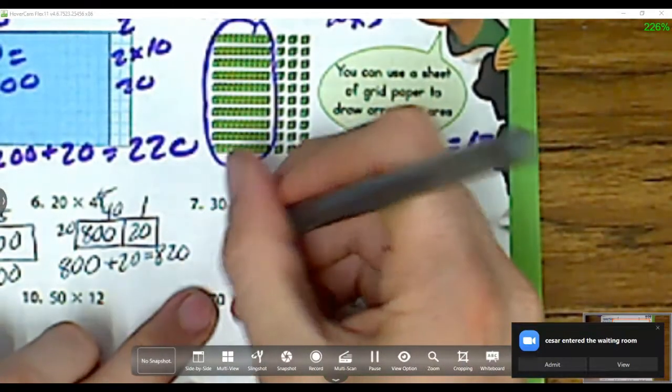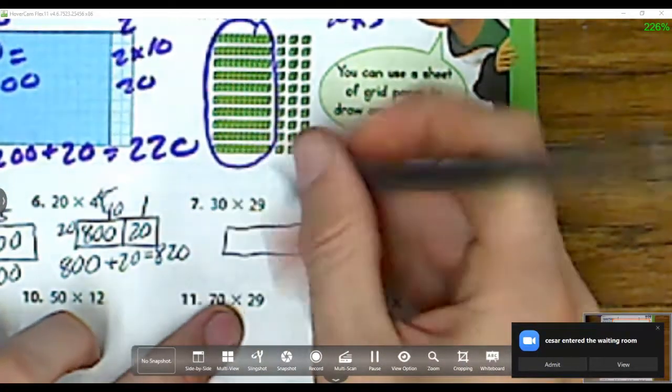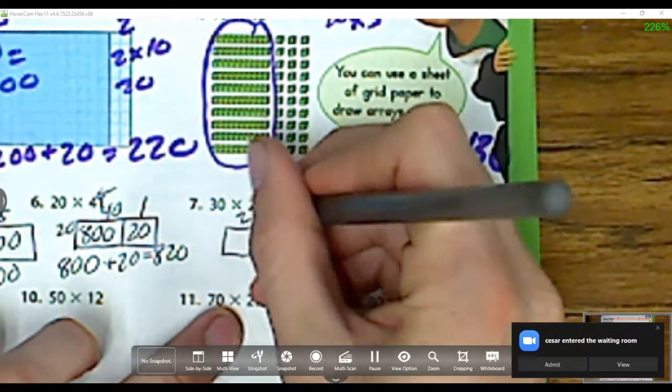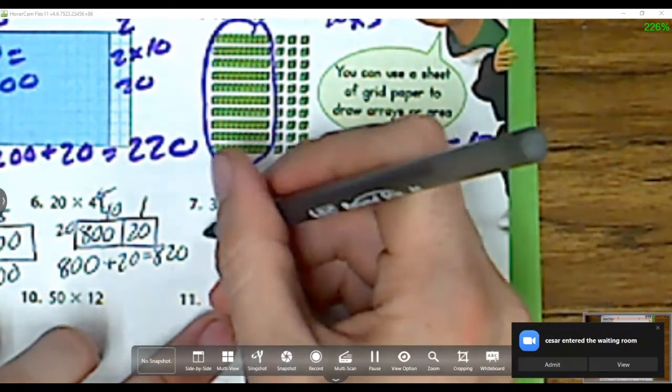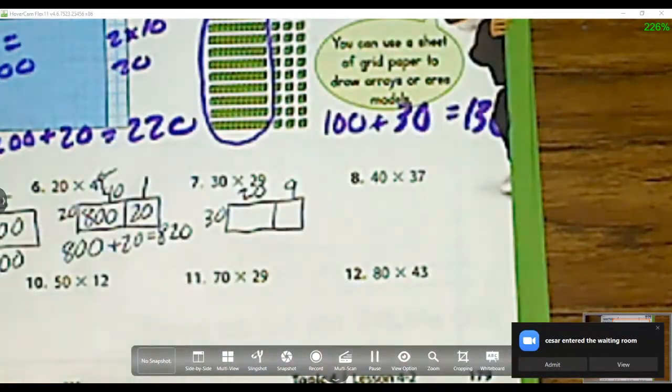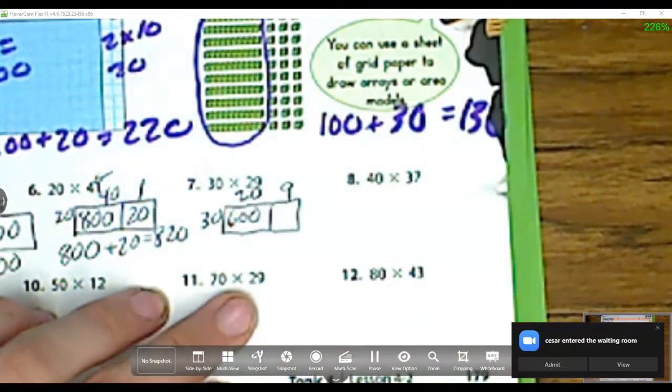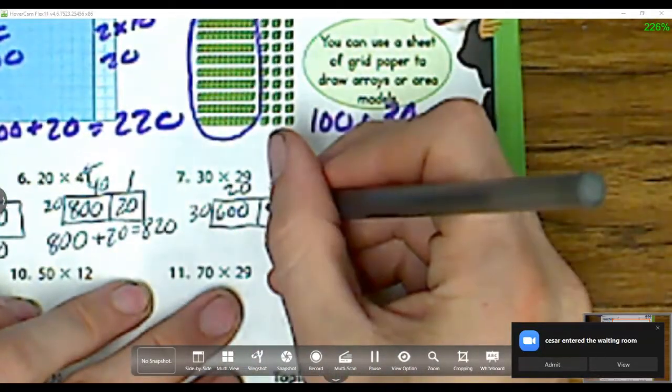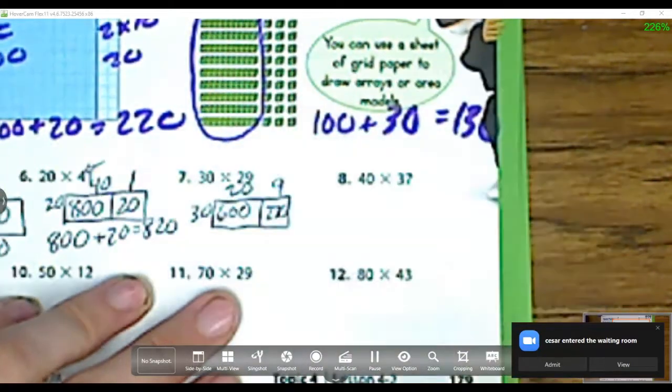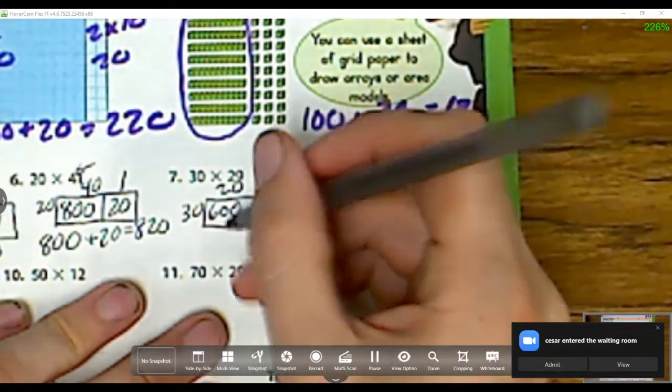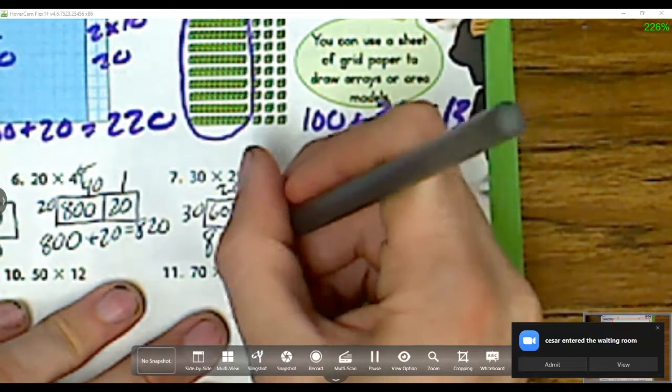Now let's do my next part, 29. I'm breaking that up into 20 and 9, and I'm multiplying it by 30. So I have 20 times 30 is 600, 30 times 9 is 270. And I add those up, 600 plus 270 is 870.